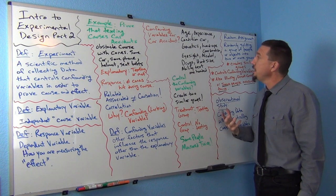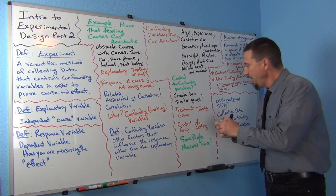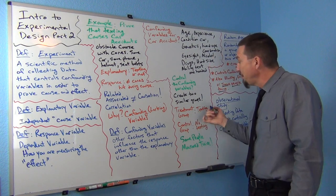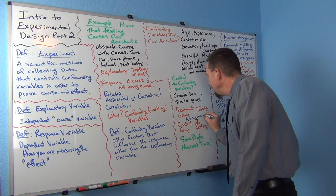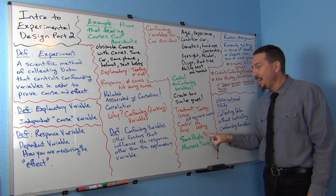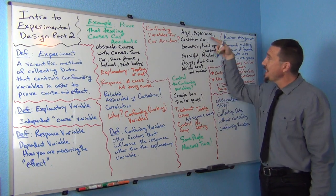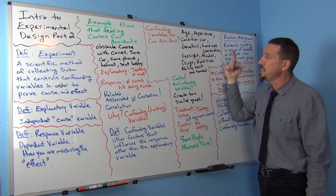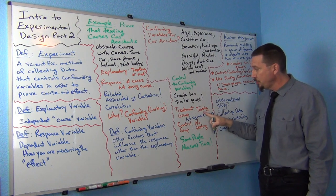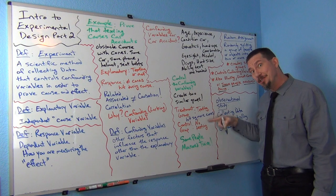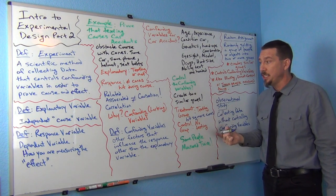Now all we need to know is how they do. If my texting group hit significantly more cones on average than the no-texting group, then I've really proven that texting causes car accidents. It's not their ages, not their experience, not the condition of the car — the only difference between my two groups was that one was texting and the other was not, but it was the same people measured twice. So it controlled all the confounding variables — my treatment group and control group were really the same people, so they were perfectly alike.